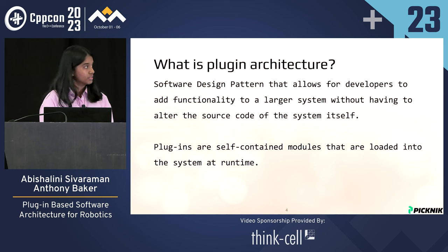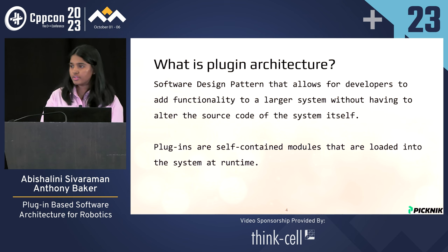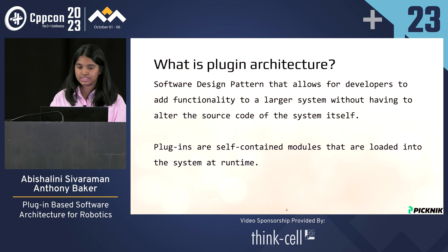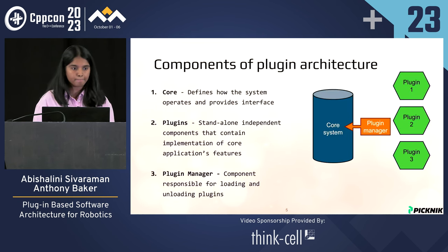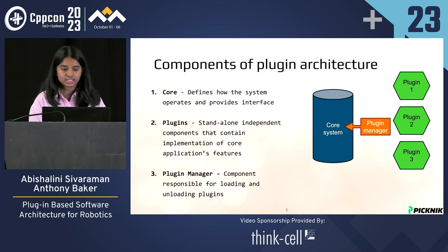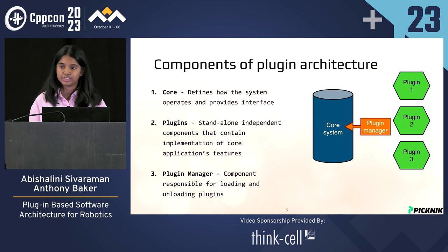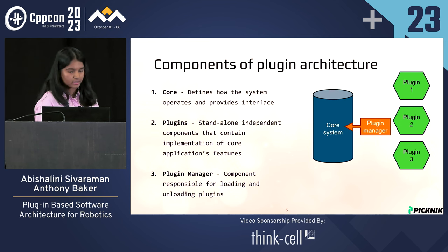So what is plugin architecture? It's a software design pattern that allows developers to add functionality to a larger system without having to alter the code of the core system itself. Plugins are self-contained modules that are loaded into the system at runtime. A plugin architecture system has three components: the core, which defines how the system operates and provides interfaces; the plugins themselves, which are standalone independent components containing implementation of the core application's features; and the plugin manager, which is responsible for loading and unloading plugins, finding the symbols in your plugin, and invoking the right functions to execute.